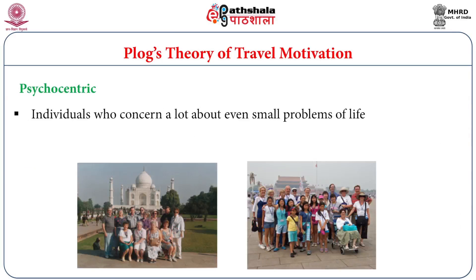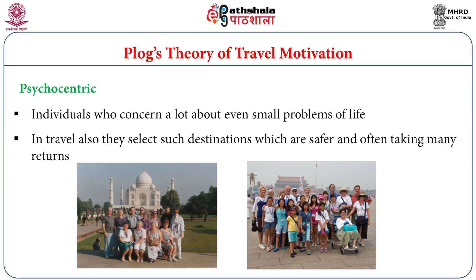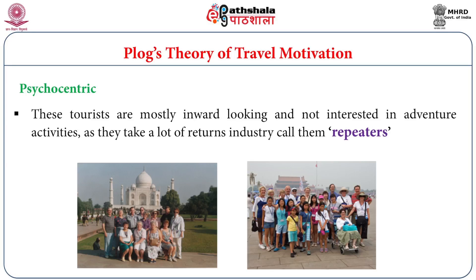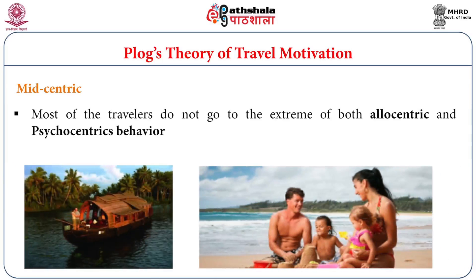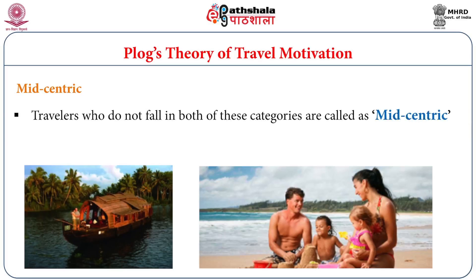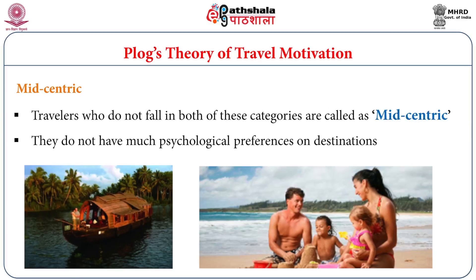Psychocentric individuals are concerned about even small problems of life — worrying about accidents during travel. They select safer destinations and often repeat the same ones. These tourists are mostly inward-looking and not interested in adventure activities; the industry calls them repeaters. Mid-centrics are most travelers who do not go to the extreme of either allocentric or psychocentric behavior. They do not have strong psychological preferences on destinations and can go to any place they want.